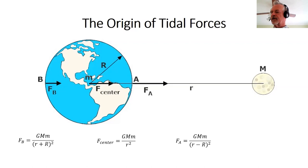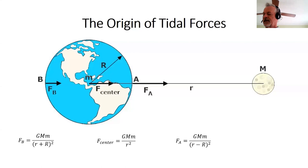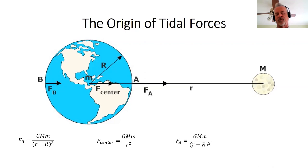If we look at the gravitational force that would act on a mass placed at point A on the surface of the Earth — with the Moon over to the right — the force at that point will be G times the mass of the Moon, capital M, times the small mass at point A, divided by the square of the distance between those two points. The radius of the Earth is capital R, and since the distance between the center of the Earth and the Moon is little r, the distance from A to the Moon is (r − R) squared. At point B on the opposite side, the force FB has a slightly larger distance (r + R) in the denominator. The force at the center of the Earth is F_center = GMm/r².